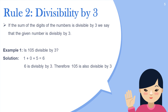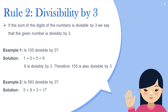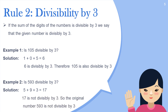Look at another example. Is the number 593 divisible by three? We add the digits: five plus nine plus three. We get 17. Since 17 is not divisible by three, the original number 593 is not divisible by three.